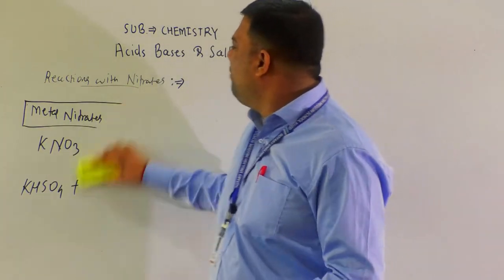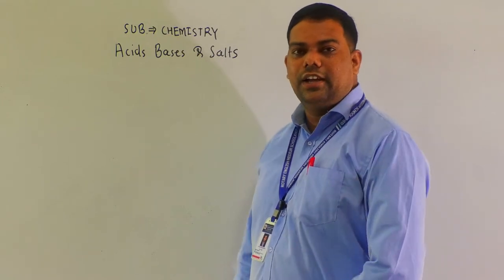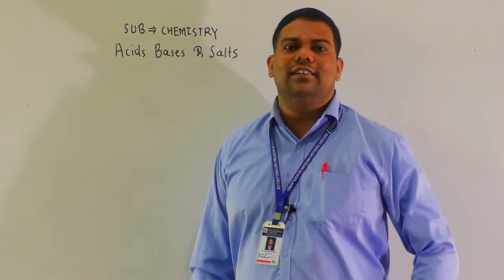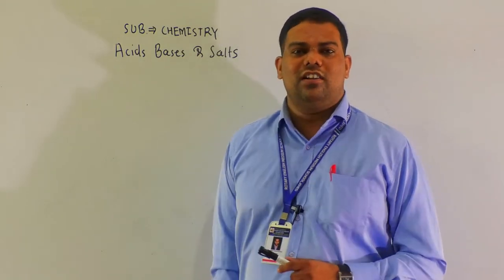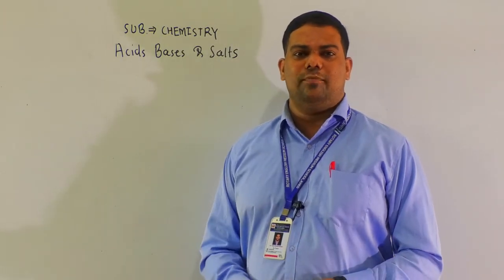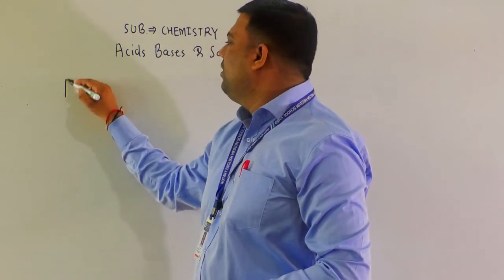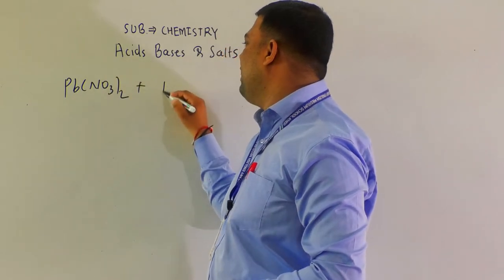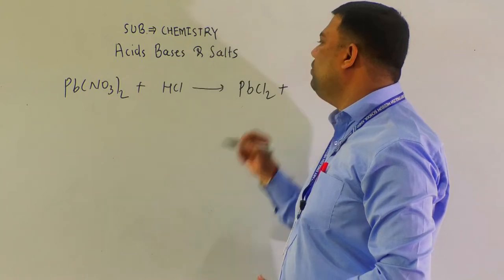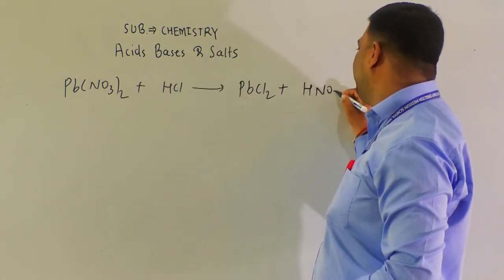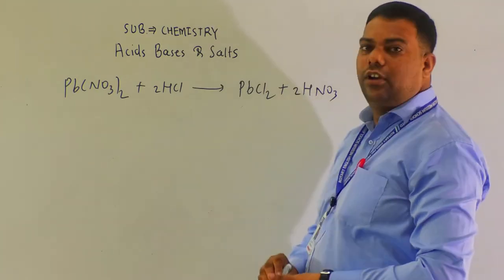A few more examples with metal nitrates. Lead nitrate Pb(NO₃)₂ reacts with both dilute HCl and H₂SO₄. It gives an insoluble salt — we call it a precipitate. For Pb(NO₃)₂ + HCl: by double displacement, we get PbCl₂ + HNO₃.